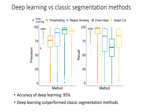These are the precision and recall scores of deep learning and four classic segmentation methods used in many research contexts. Deep learning scored 95 for both precision and recall, significantly outperforming other methods. Deep learning also has less variance, making it very robust on difficult instances.